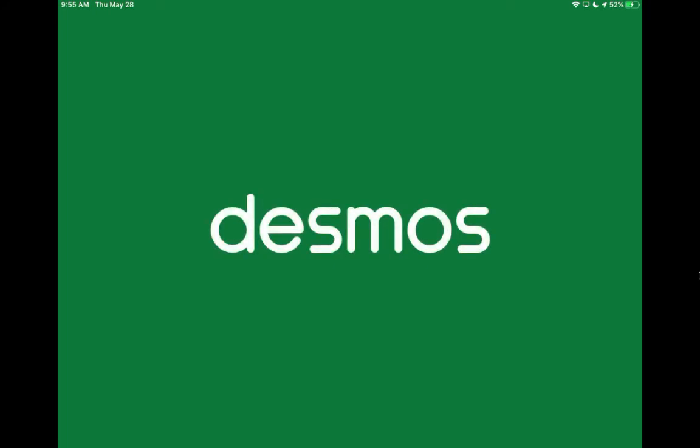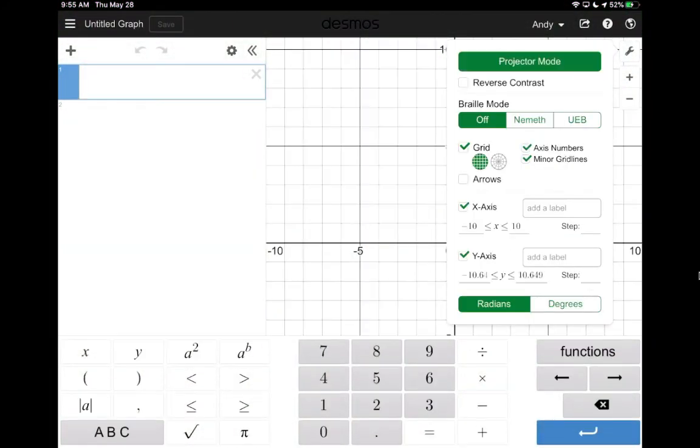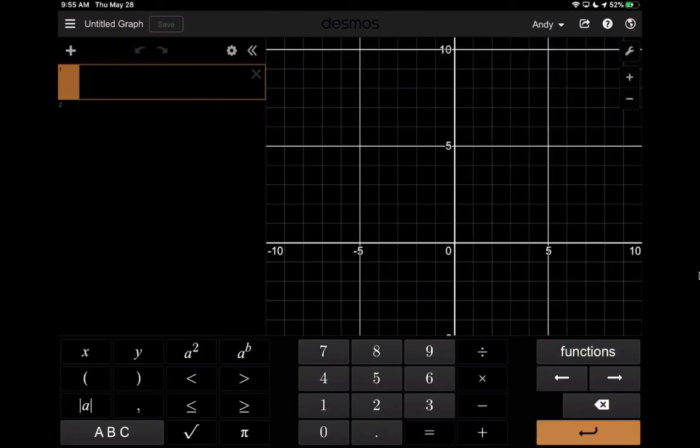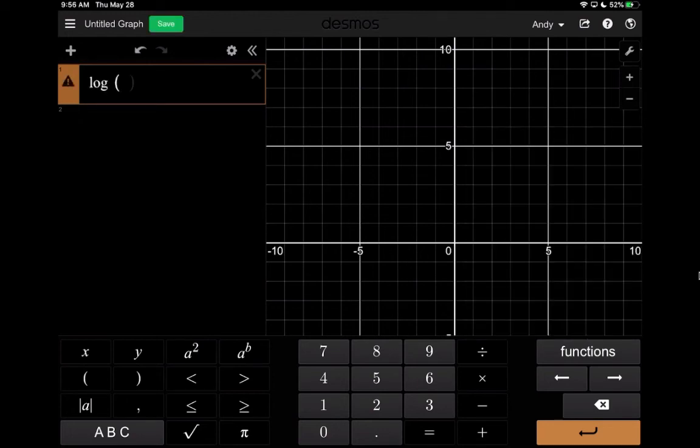So here is the Desmos graphing calculator. And I'm just going to go into this mode because I like it. And I'm going to go into functions. And I'm going to go into miscellaneous. And you can see that there is a log base a. So log base a, now I specify the 3 here. And now I move over.